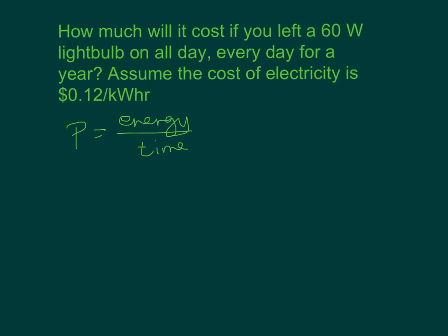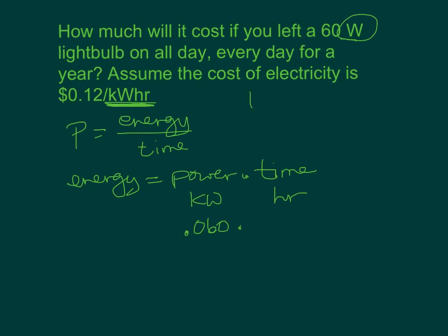Look at the units we were given for our energy. Our energy is in kilowatt hours. So we need to take our power, we know our power is 60 watts, and we need this to be in kilowatts. We need our time to be in hours to find out how much energy we're using. So 60 watts is 0.060 kilowatts. How many hours are there in a year? There's 365 days in a year, and there are 24 hours in a day. So 365 times 24 is 8,760 hours.